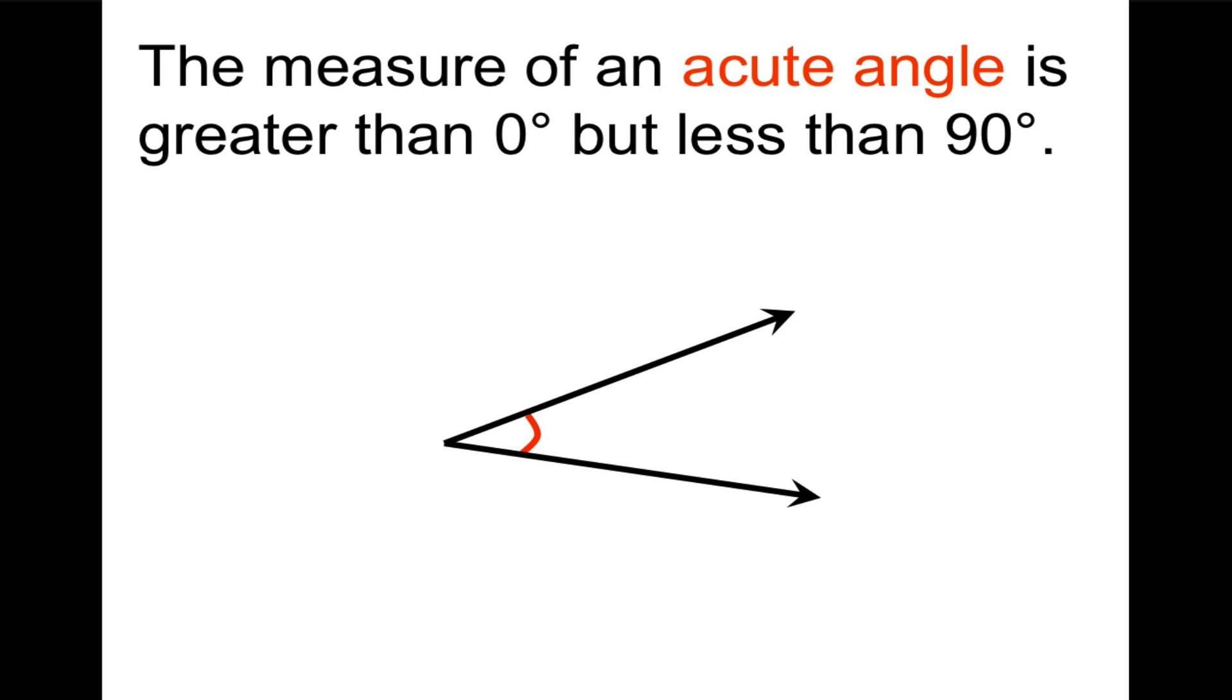Alright. Four more definitions. We're going to do acute, right, obtuse, and straight. The measure of an acute angle is greater than zero degrees but less than 90. Acute literally means sharp.